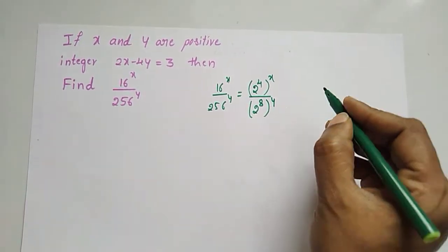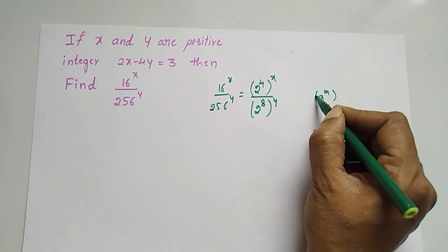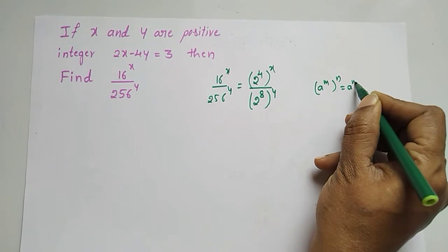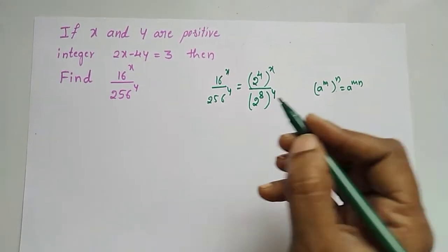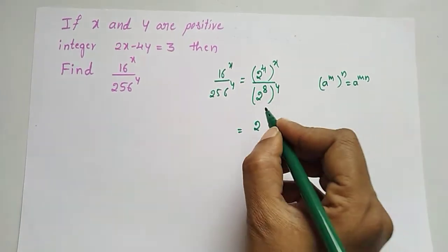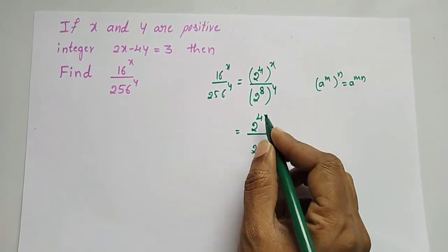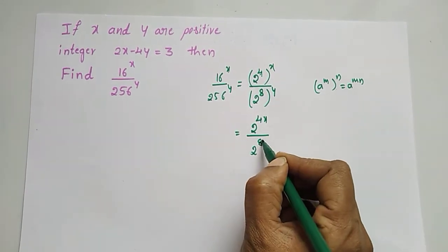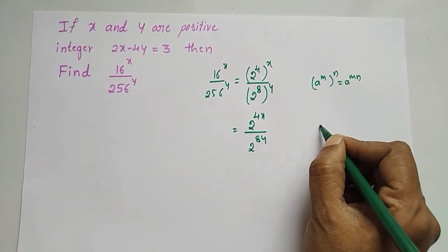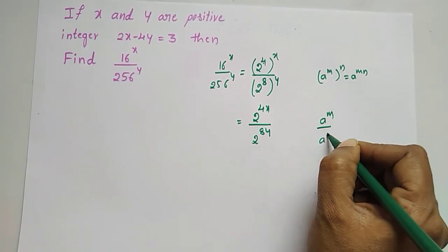Apply the index formula: a to the power m to the power n is equal to a to the power m into n. Applying this formula, we get 2 to the power 4 into x, which is 4x, divided by 2 to the power 8 into y, which is 8y.